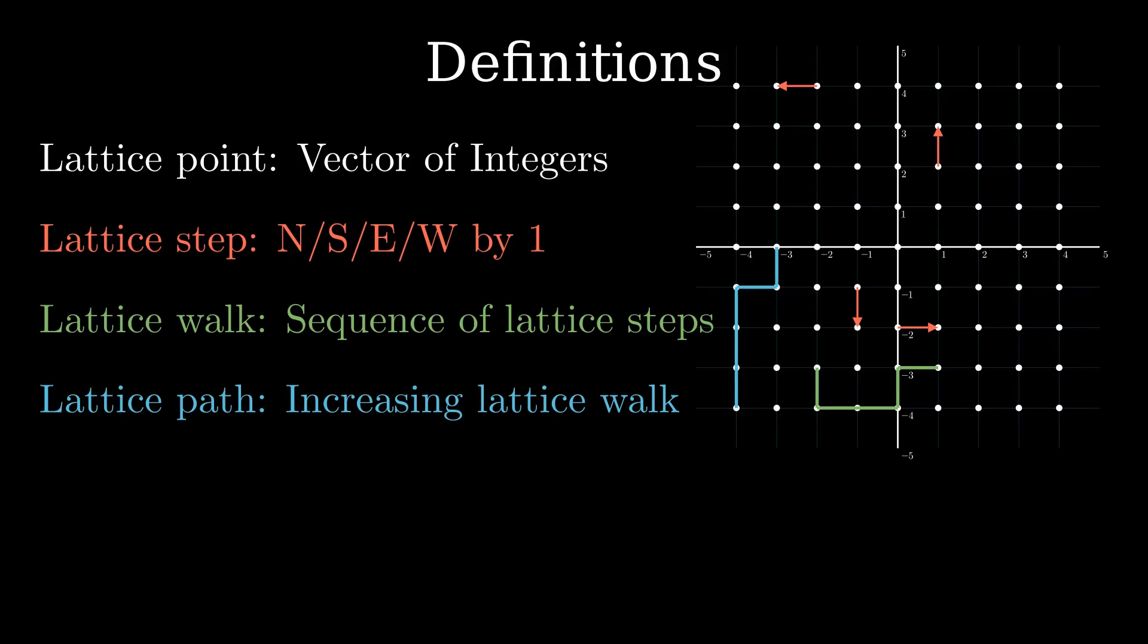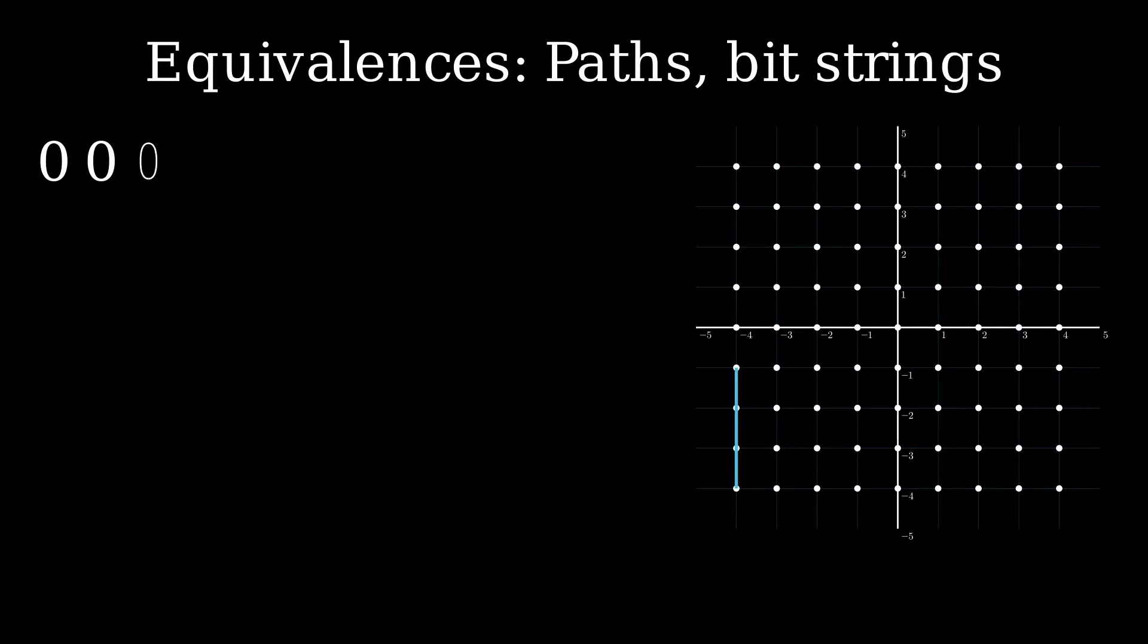If we code every step in a lattice path with a 1 or 0 corresponding to a right or up move, then this shows a bijection between lattice paths and bit strings.